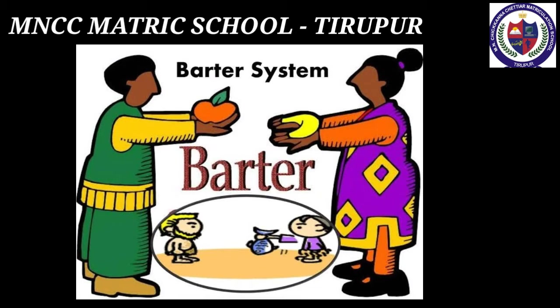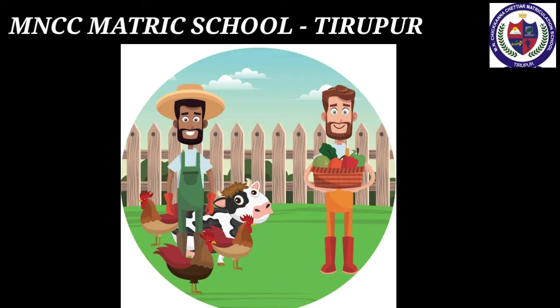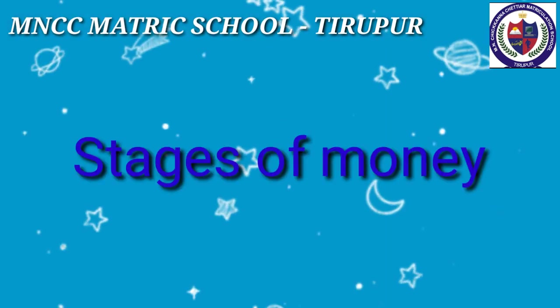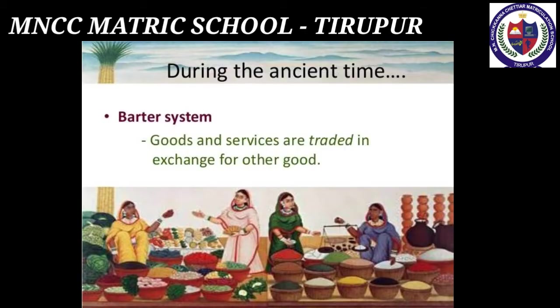The evolution of money started with the barter system. The barter system is exchanging goods for goods without the use of money. In the primitive stage, it is an old method of exchange used for centuries, long before money was invented. People exchanged services for goods and goods for other services in return. The barter system had many deficiencies like lack of double coincidence of wants, common measure of value, indivisibility of commodities, and difficulties of storing wealth.